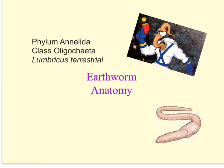These worms have a body cavity known as a true coelom, and the lining of the cavity is called the peritoneum. Earthworms belong to the class Oligochaeta. This class is composed of both terrestrial and freshwater worms. The worms range in length from 0.5 millimeters up to 2 to 3 meters, such as the giant Gippsland earthworm of Australia.